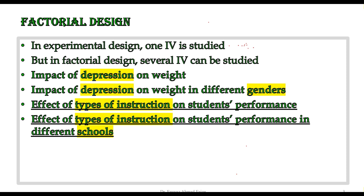To make this topic fall under factorial design, we add another independent variable: 'effect of type of instruction on student performance in different schools.' I have introduced different schools as another IV. By changing the schools and seeing the effect of type of instruction in different schools on student performance, this becomes a factorial design topic.